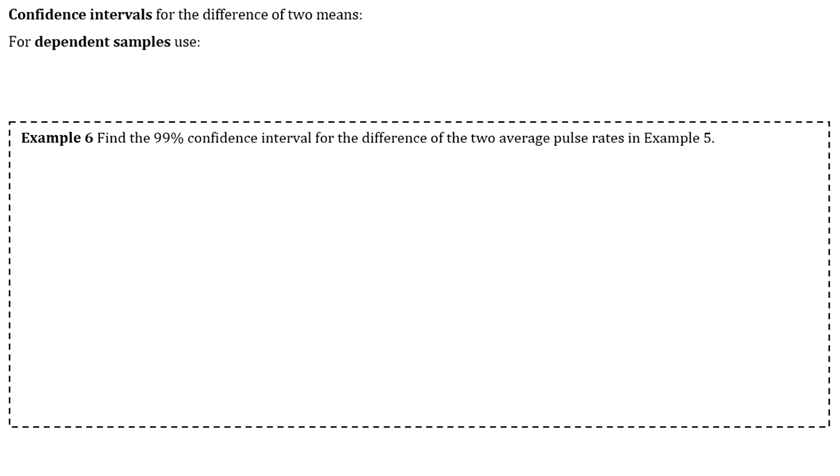Okay, and one last thing. So we can do confidence intervals for the difference of two means for dependent samples. For that, we're just going to use our standard t-interval in our calculator. And the process to do it, it's basically the same steps as doing the t-test. So you're still going to have to create that L3 list. And then you'll use the t-interval, and you'll just tell your calculator to do it with L3, and that'll generate your confidence interval. So example six says, find the 99% confidence interval for the difference of the two average pulse rates in example five.